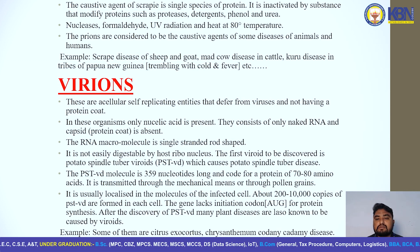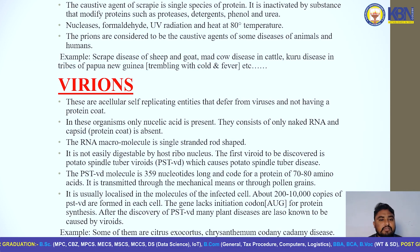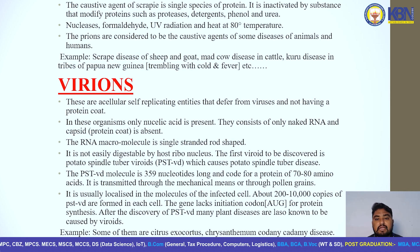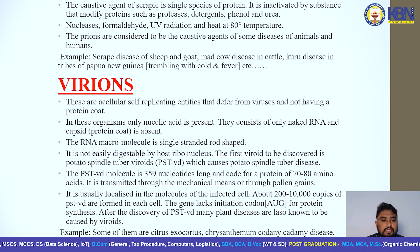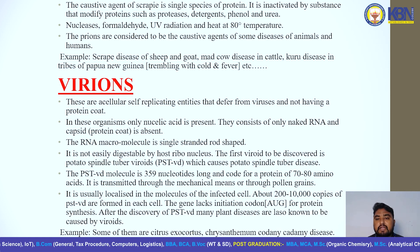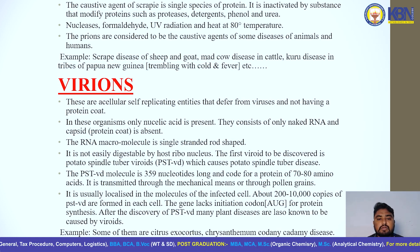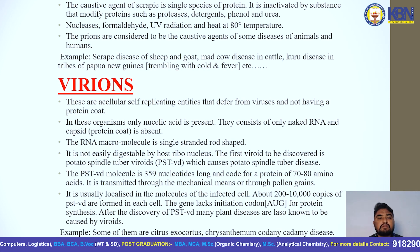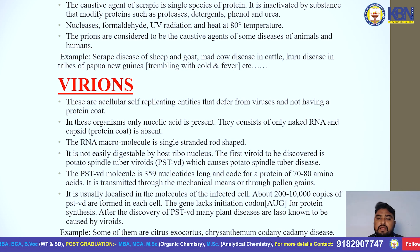Stanley Prusiner was awarded the Nobel Prize in 1997 for the discovery of prions. The causative agent of scrapie is a single species of protein. It is inactivated by substances that affect proteins such as proteases, detergents, phenol, urea, nucleases, formaldehyde, UV radiation, and heat at 80 degrees Celsius.